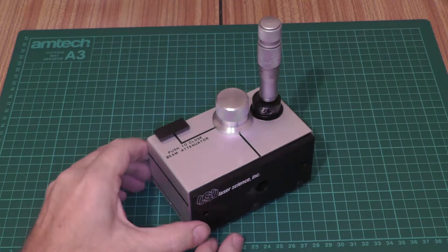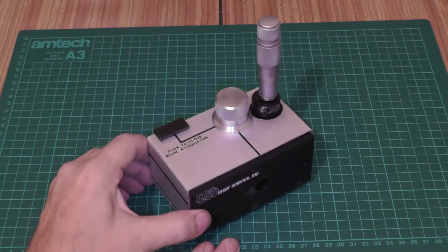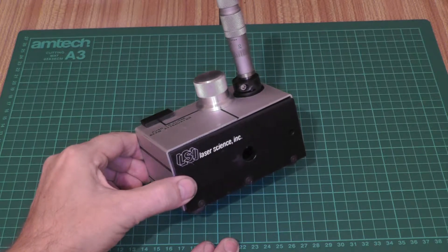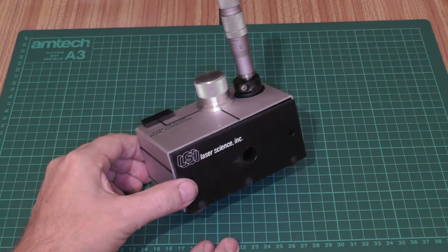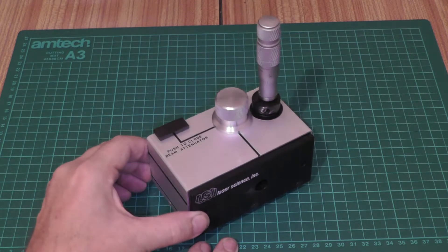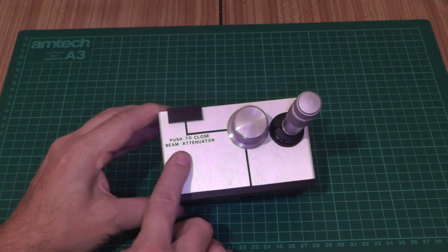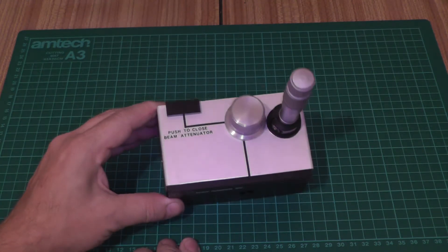So this is the LSI dye laser that I picked up off eBay recently. I think I paid a little bit over the odds for this but certainly not what it was worth. This was actually listed as a laser attenuator because it has the word beam attenuator on the top there.